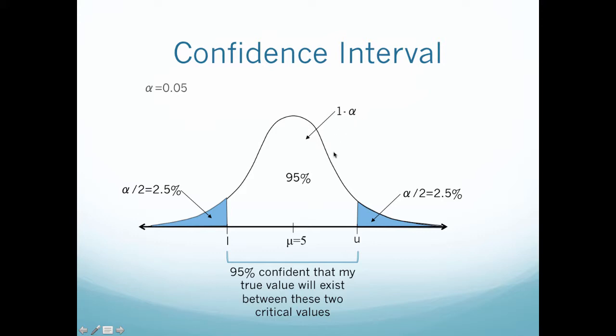So if you remember the definition of a bell curve or a normal distribution, the entire area under the bell curve will equal 1. So when I have 1 minus my alpha, that would give me 95%, meaning that I'm 95% confident that my true value will exist between my lower critical value here and my upper critical value here.